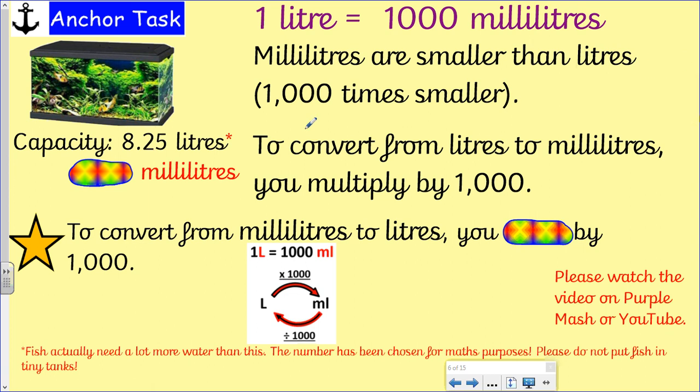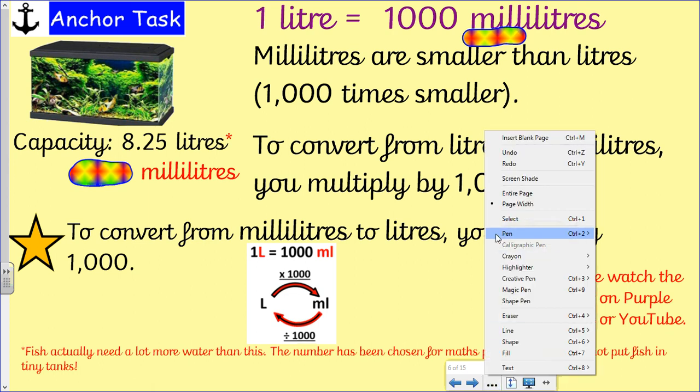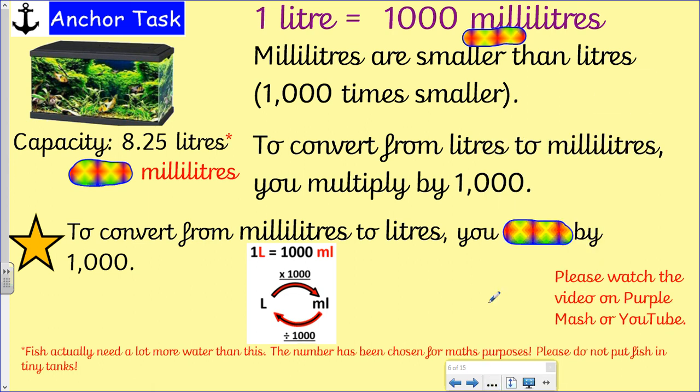Right then year six, we are on to part two of our lesson talking about capacity, volume, litres and millilitres. One litre equals a thousand millilitres. That was on your supporting handout. Mille is actually a thousand in French, so hopefully you can see we've got millilitres. A thousand millilitres are smaller than litres, they are 1000 times smaller.